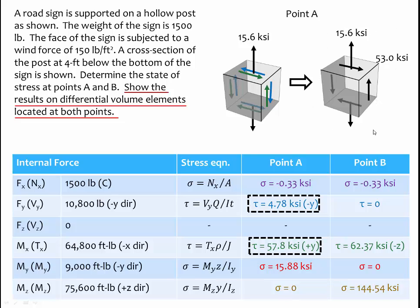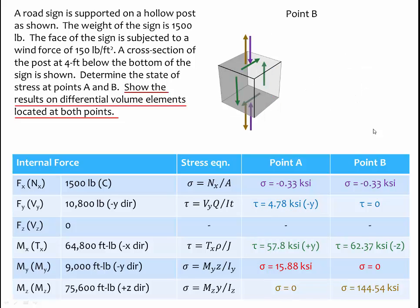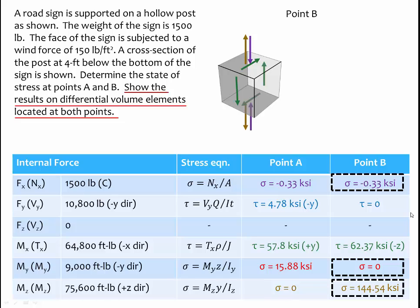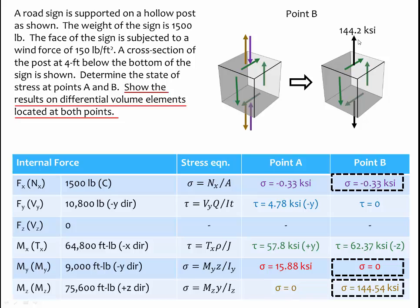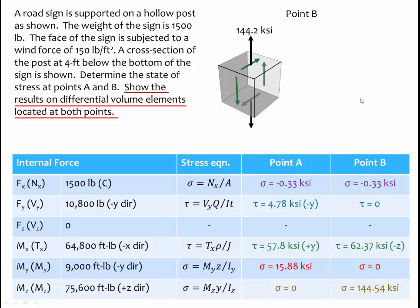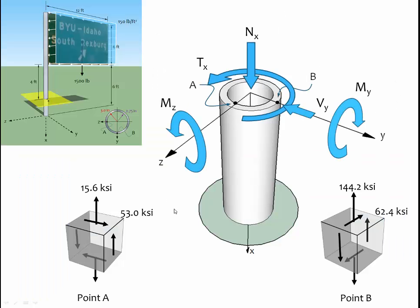This is our final differential volume element for point A. Now at point B, normal stress in the x direction has two contributions: compressive stress of 0.33 ksi and a very large tension stress of 144.5 ksi, combining to 144.2 ksi in tension in the x direction. For shear stress, there is only one non-zero contributor, acting in the negative z direction at 62.37 ksi, which is added to the differential element. Our problem is now complete. We solved this using the principle of superposition — evaluating each resultant load one at a time to find stresses on the differential volume elements, then combining them at the end to get the final result.